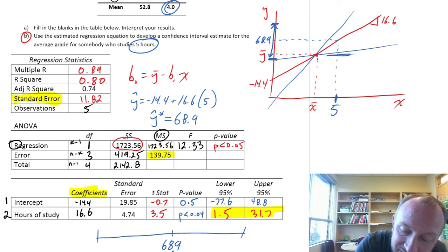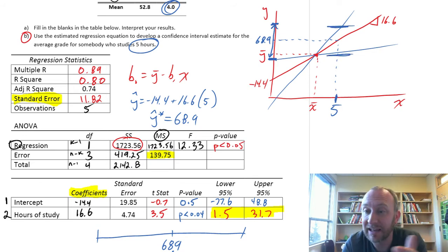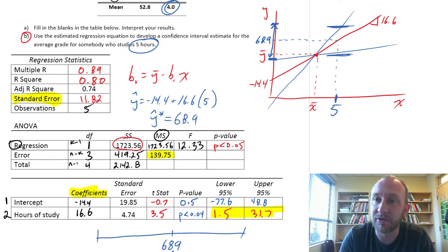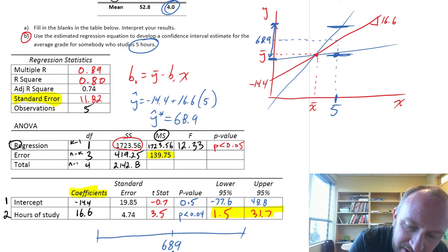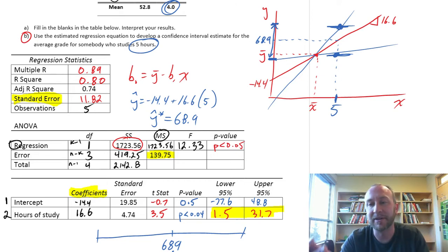As we can see, given the uncertainty in that slope, in those estimated parameters, well, that introduces uncertainty into that point estimate for the dependent variable. Maybe it's somewhere down here, maybe it's somewhere up here, or anything in between.